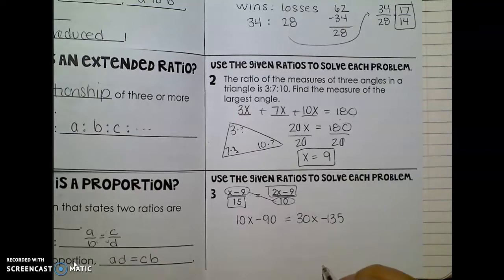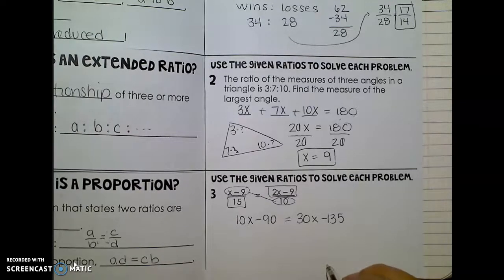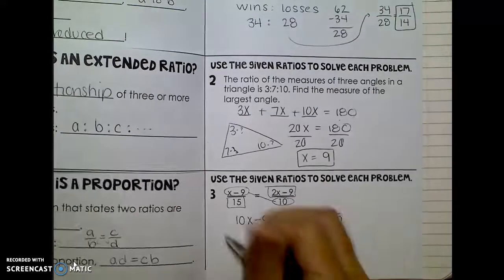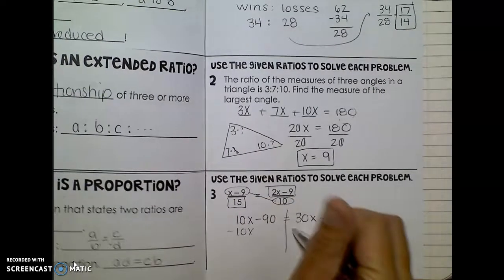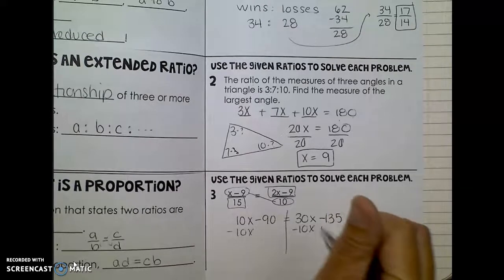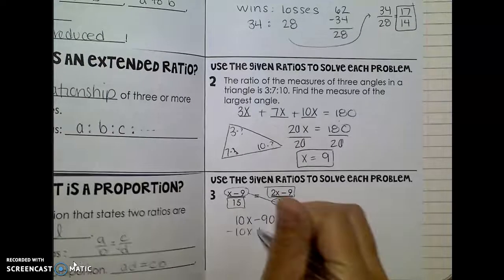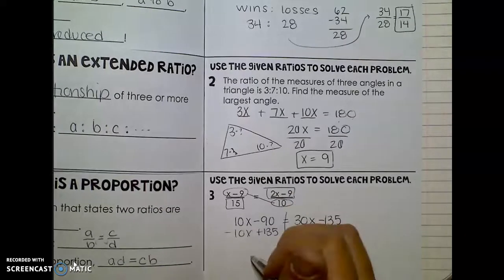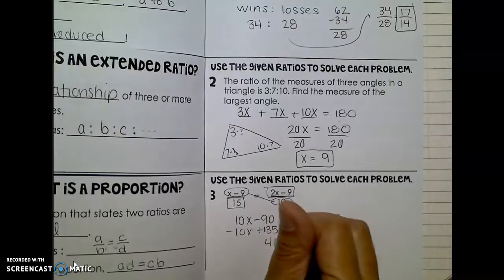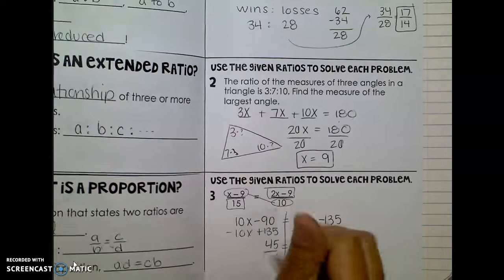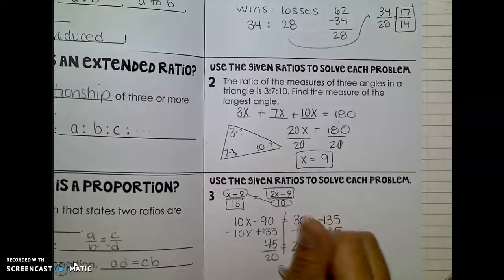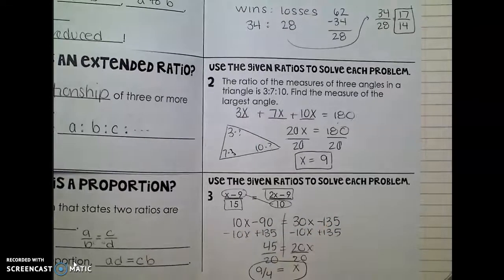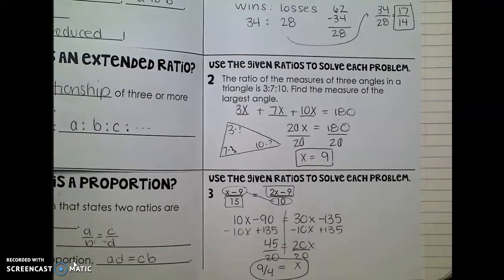And so then we can just solve for x because I don't have a denominator anymore. And so I would get the x's on the same side by subtracting the 10 and then adding the 135. So 20x equals 45, and then divide each by 20. So x is 9 fourths.